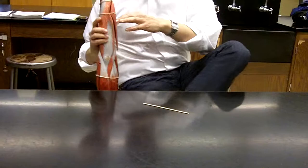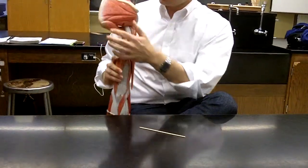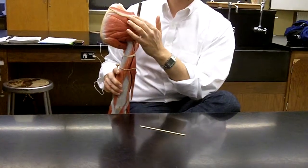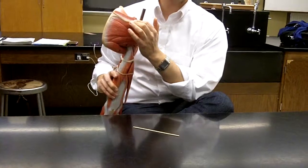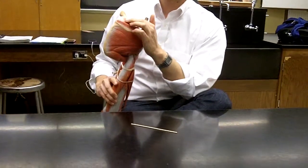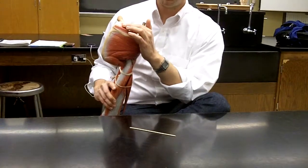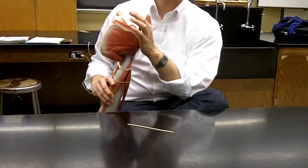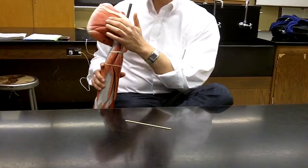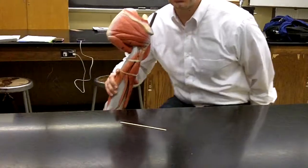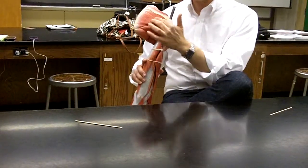We have the scapula here. This is the spine of the scapula. The fossa above the spine of the scapula is the supraspinous fossa, and the muscle in that fossa is called the supraspinatus muscle. The muscle below it is called the infraspinatus muscle. So: supraspinatus, infraspinatus.